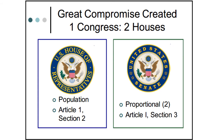The Great Compromise created one congress with two houses. In the U.S. House of Representatives, we had a house based on population, described in Article I, Section II of the U.S. Constitution. On the other hand, we have the United States Senate, described in Article I, Section III. Instead of using population, the Great Compromise decided each state would have two senators — a proportional 100 senators from the whole 50 states put together.